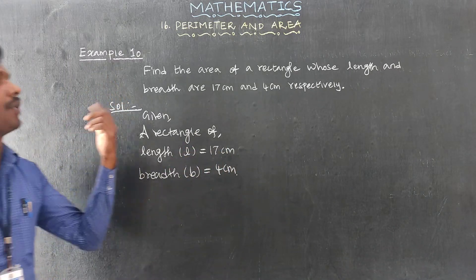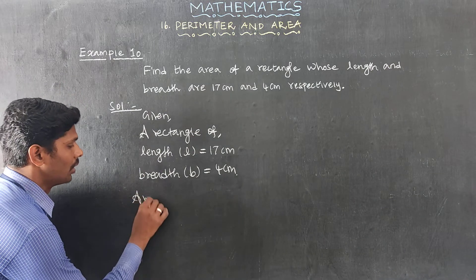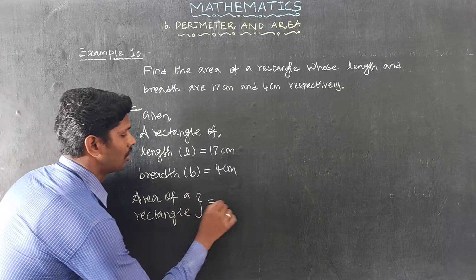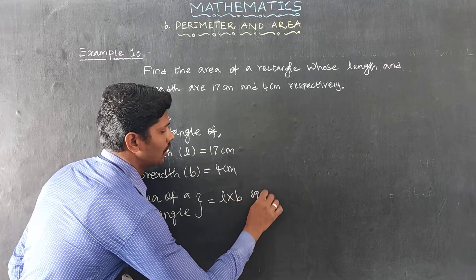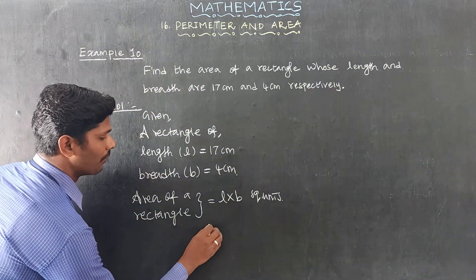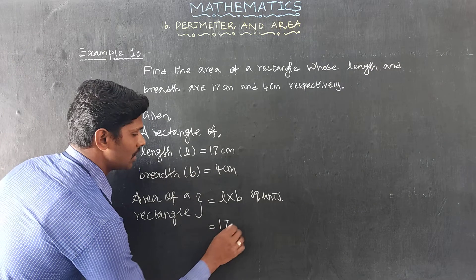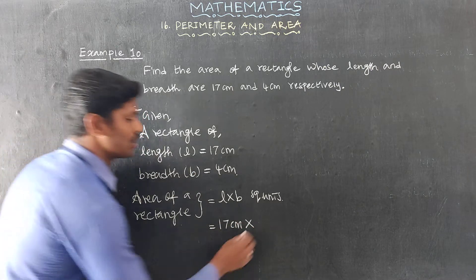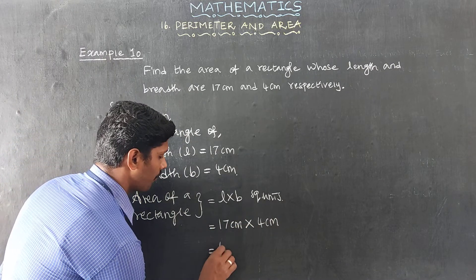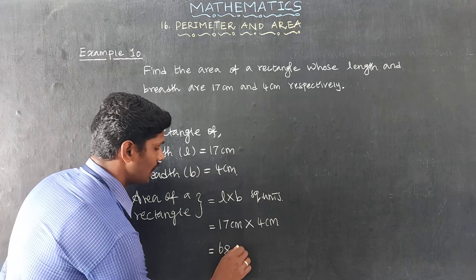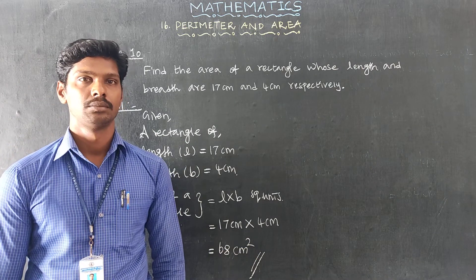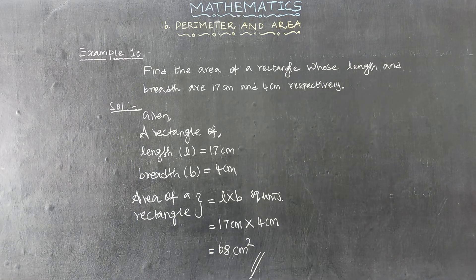Area of rectangle: area of rectangle is equal to L into B. Length is 17 cm and breadth is 4 cm. 17 cm x 4 cm equals 68 cm square. Area of rectangle is 68 cm square. Thank you.